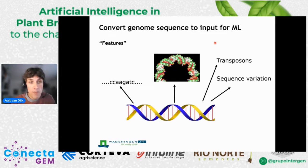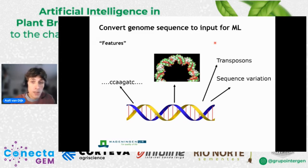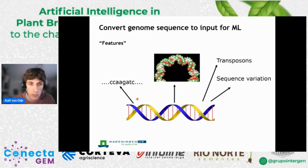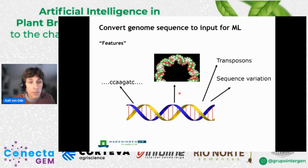Now I want to explain how we can convert genome sequence to a numeric input — so-called features. There are different ways: in some approaches people count the occurrence of certain k-mers. In our case we used a combination of multiple things. We looked at sequence variation, where the absence or presence of certain variation would be a number. We looked at the occurrence of transposons in the DNA. We also looked at the occurrence of dinucleotides. And we used an approach which predicts the three-dimensional structure of the DNA, giving a set of numbers to characterize a given genome region.